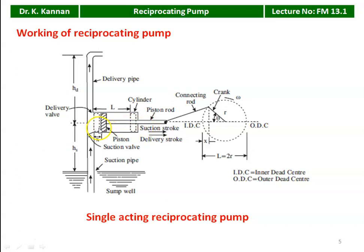When the piston moves from IDC to ODC (backward, toward the right side), vacuum is created, pressure decreases, the suction valve automatically opens, and liquid rushes into the cylinder. When the piston reaches ODC, the cylinder is completely filled with water. In the second stroke (delivery stroke), the piston moves from ODC to IDC (right to left). The delivery valve is closed initially; as the piston compresses the liquid, pressure increases, the suction valve closes automatically. When pressure further increases, the delivery valve opens due to pressure difference and water is supplied to the delivery pipeline and tank.